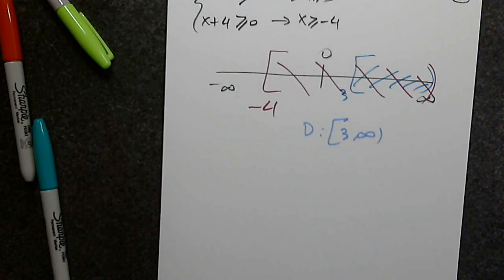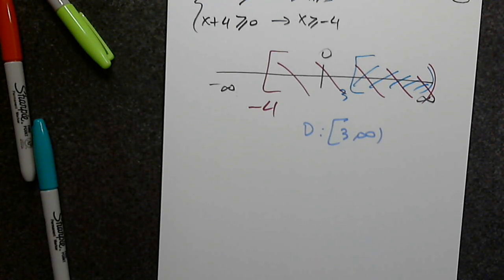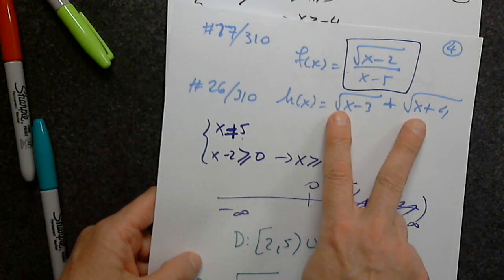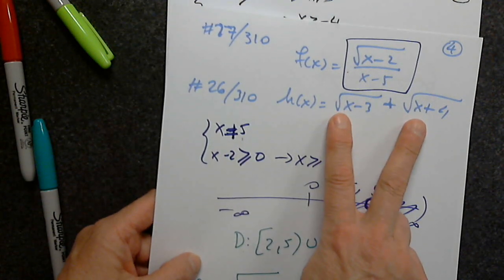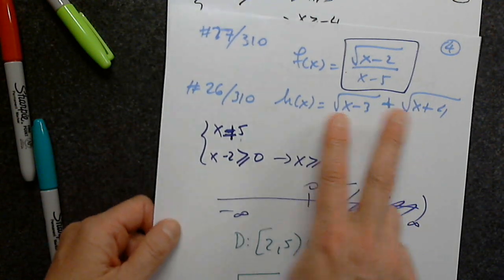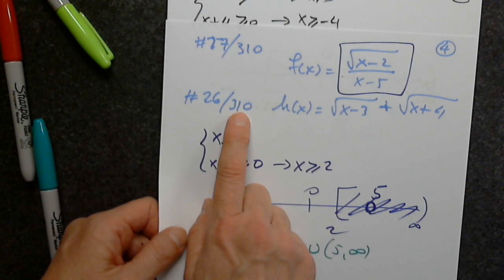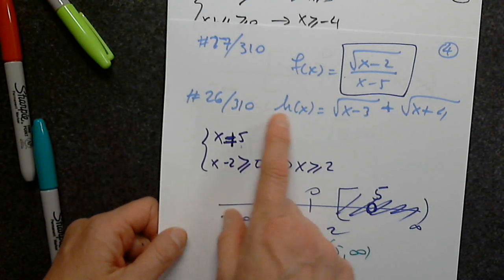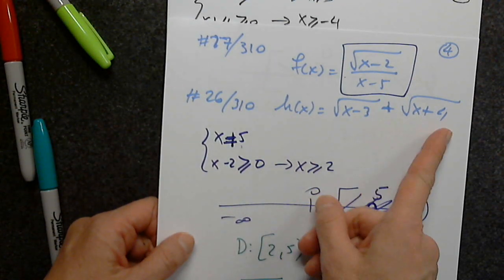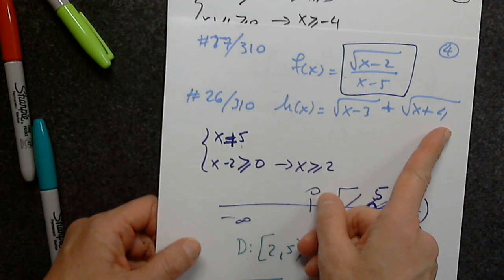Any more questions? Excellent questions. This was problem 26 on page 310: h(x) = √(x - 3) + √(x + 4). And I also want to show a graph problem — graphing the inverse given a graph of the function.